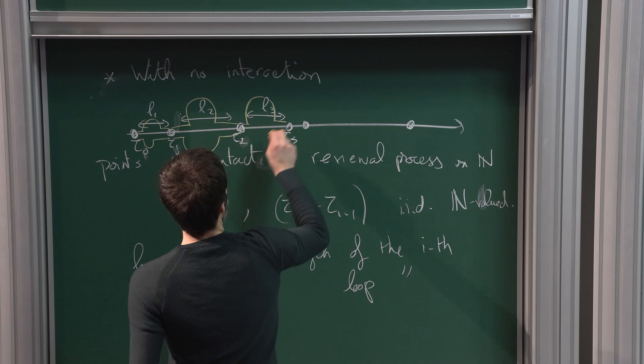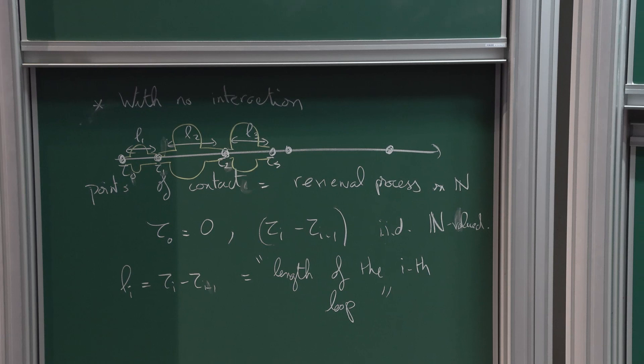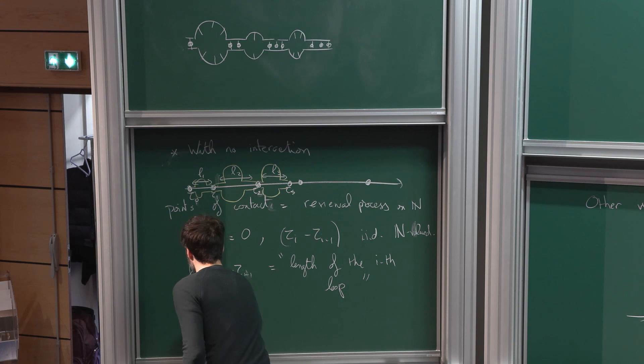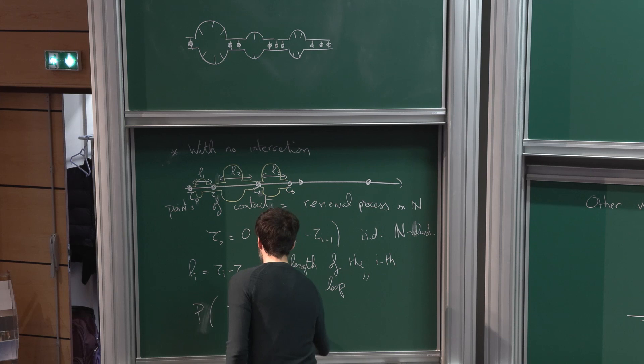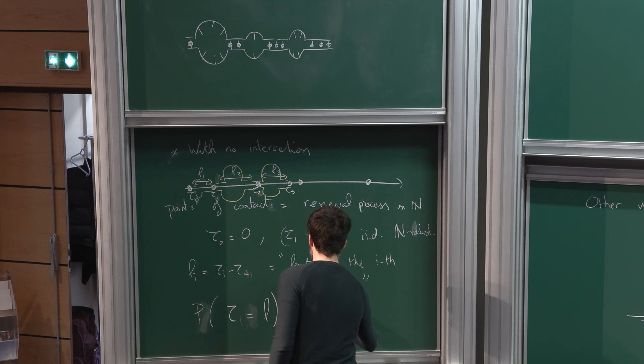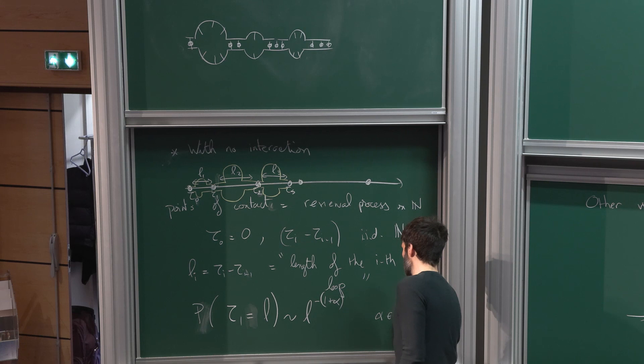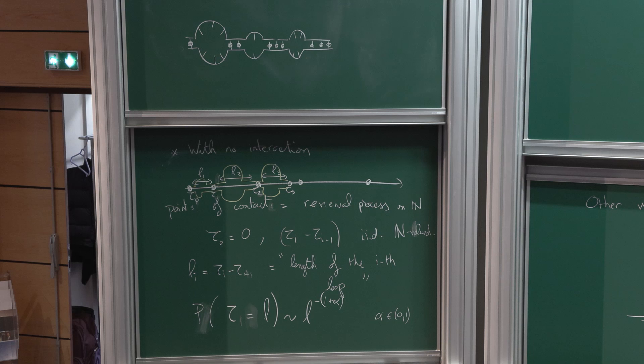The loops have i.i.d. lengths, and a common assumption in this model is that the probability of having a loop of length L behaves like L to the power minus (1 + alpha). I will focus on the case alpha between 0 and 1, because that's when you have a scaling limit.